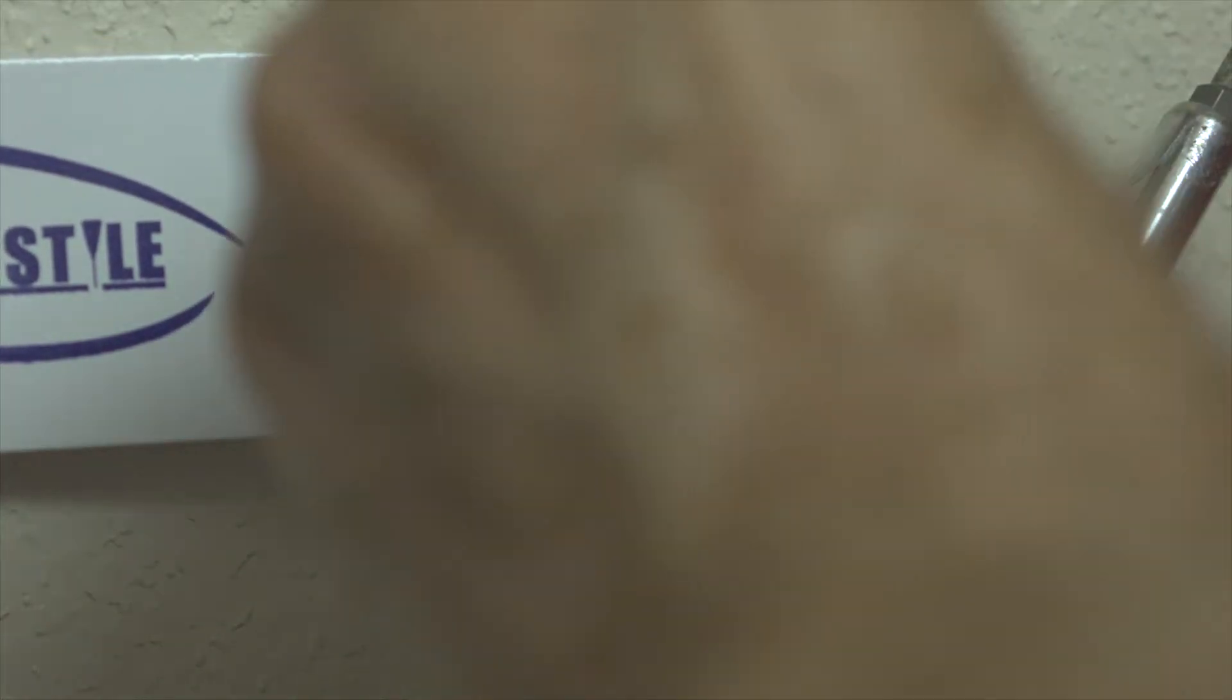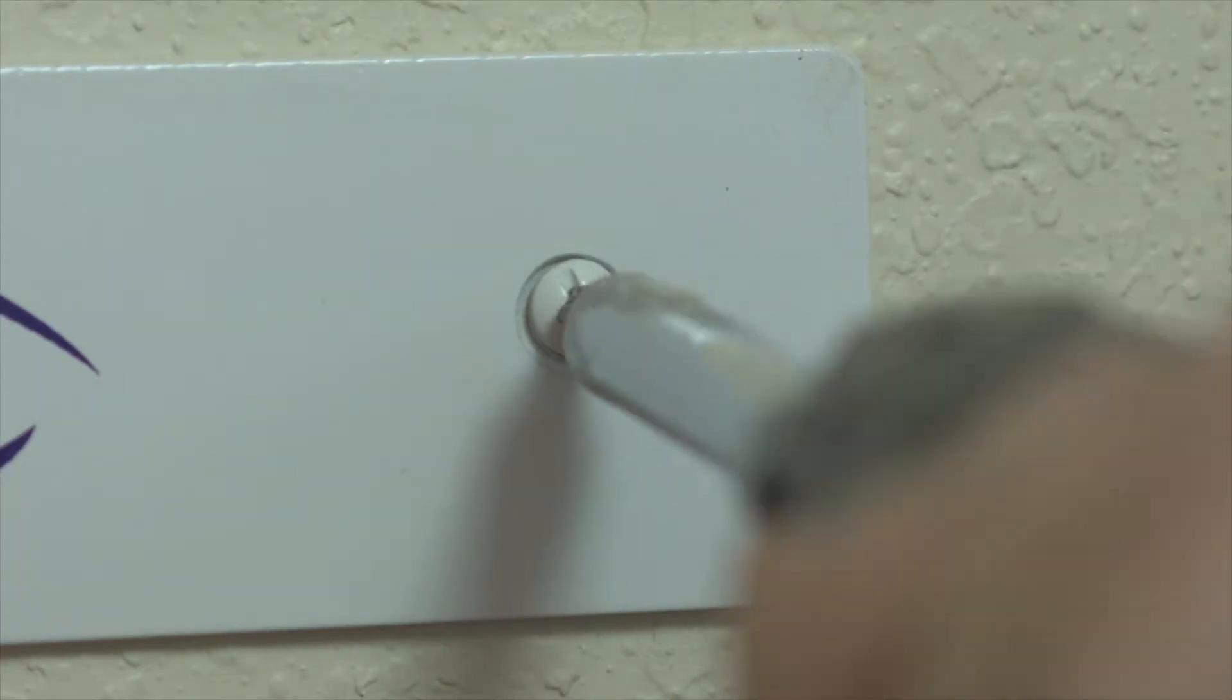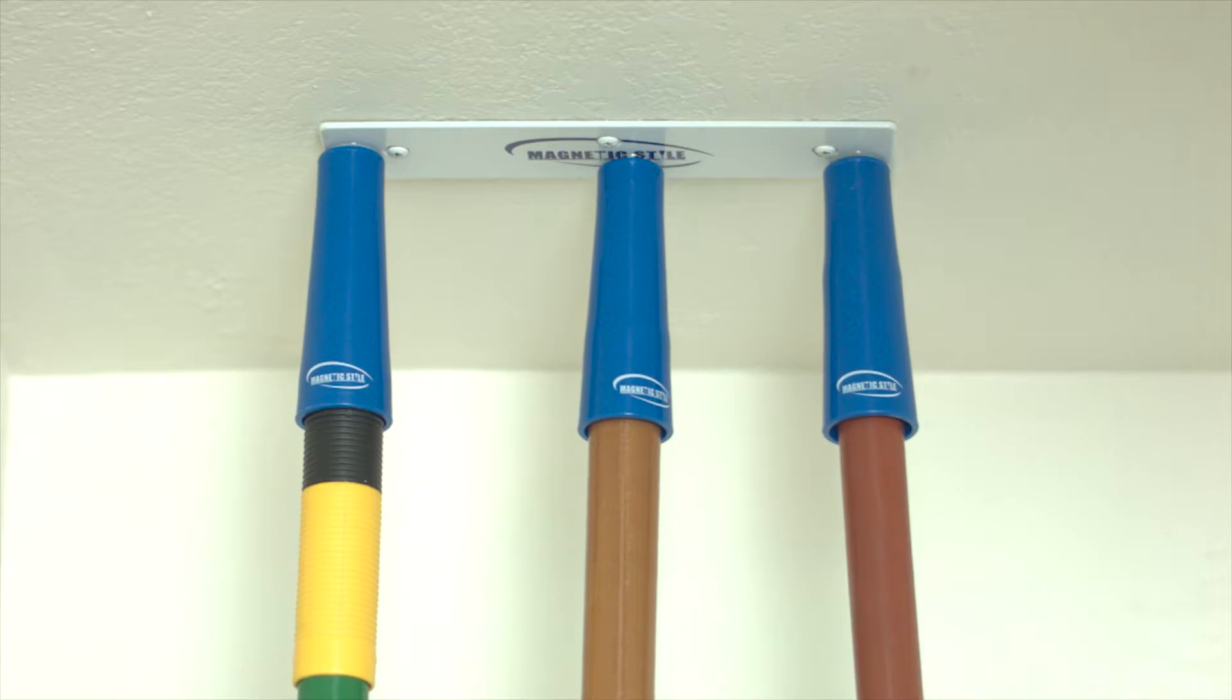For each screw, reinsert the screw through the ceiling mount hole, then into the sleeve and tighten the screws. And you're all set. Start using your ceiling mount right away.